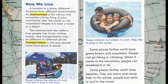Food, clothes, homes, and transportation may be different in different places. Transportation is the way people move from place to place. The caption at the bottom there in blue says: these children live where it is cold. They like to play in the snow. The caption here says: these children live where it is hot. They like to play in the water.